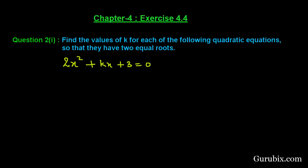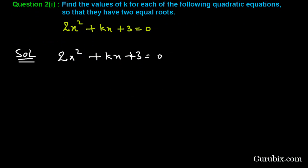Let us see how to solve this question. First of all, we shall collect the given quadratic equation that is 2x² + kx + 3 = 0.